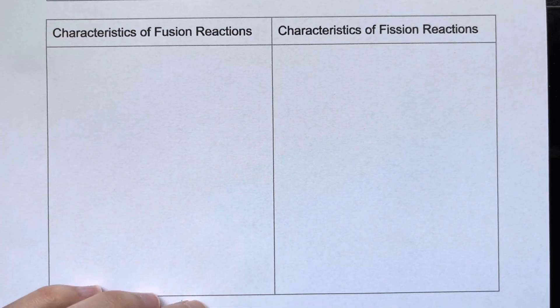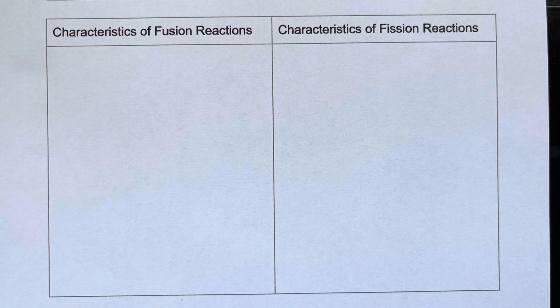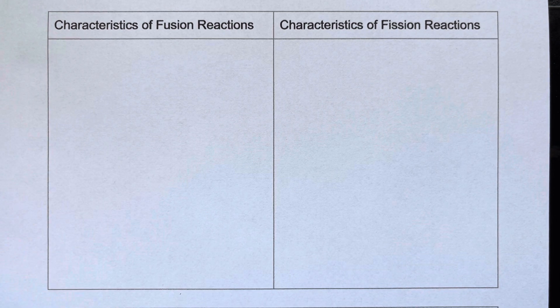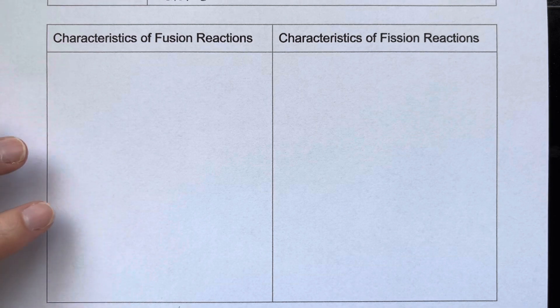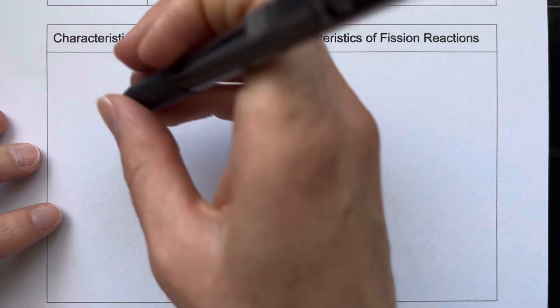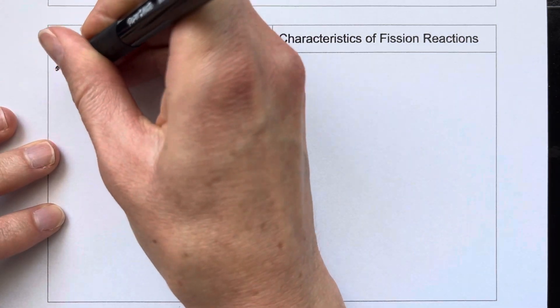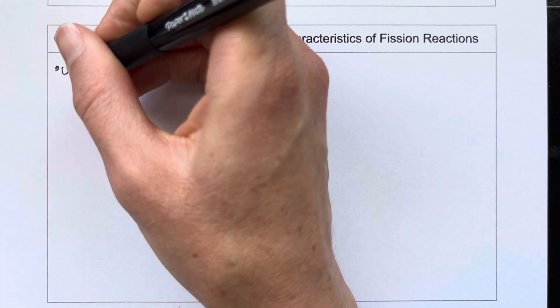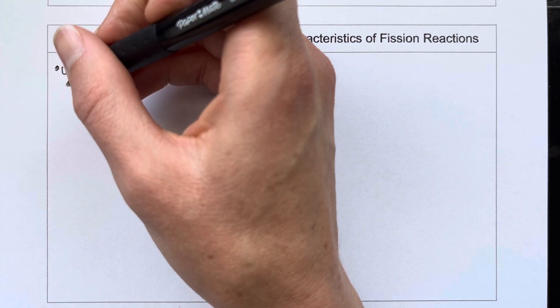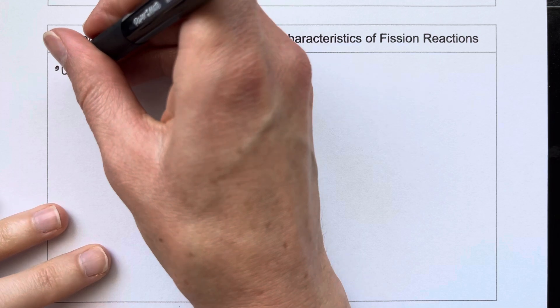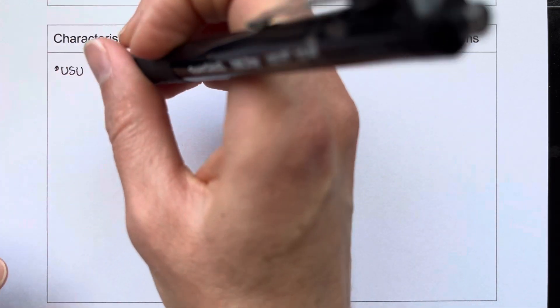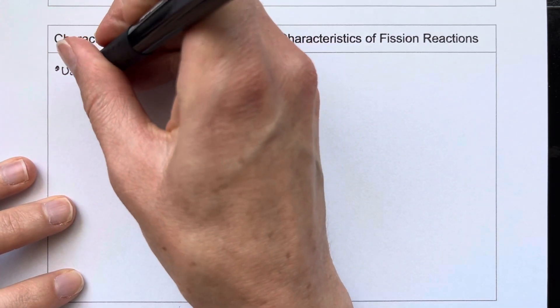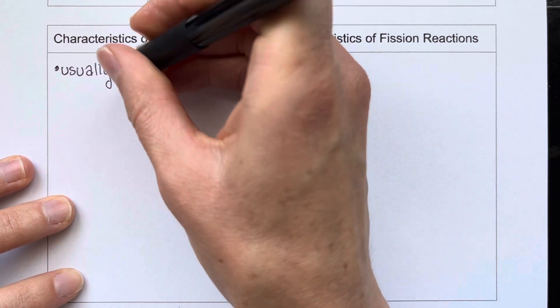So let's go into a few more characteristics of these different types of reactions. So first of all, fusion usually happens with smaller elements. So you're going to have two smaller elements, like hydrogen is very common, combining to form bigger elements. So in the sun, hydrogen atoms combine and form helium. And then those can combine and form even bigger elements. But hydrogen fusing into helium is the most common.